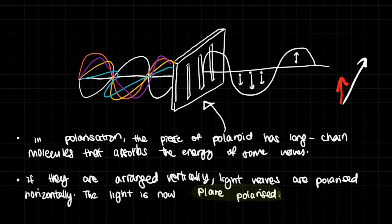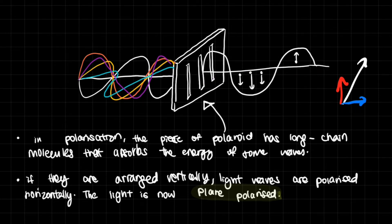It also means that the magnetic field component at 90 degrees is also preserved, but this diagram ignores magnetic fields, so you have to assume that the magnetic component is also there. We're just saying every other electric field direction is filtered out — that's why we only drew one wave.